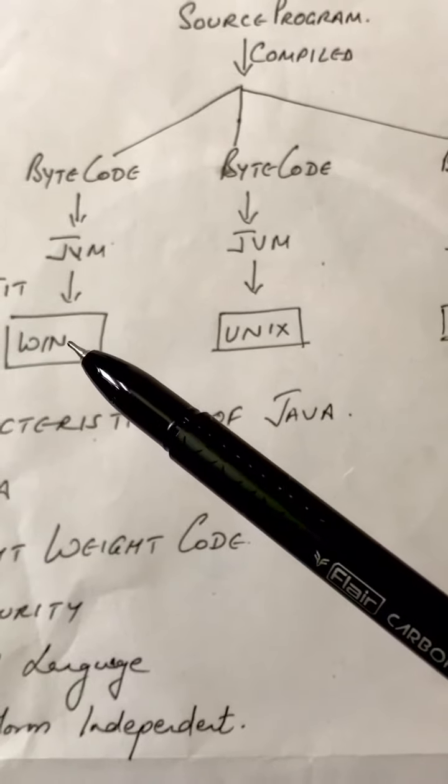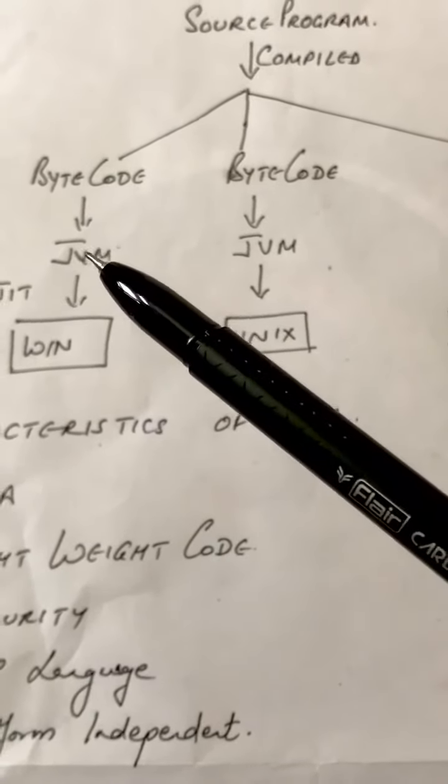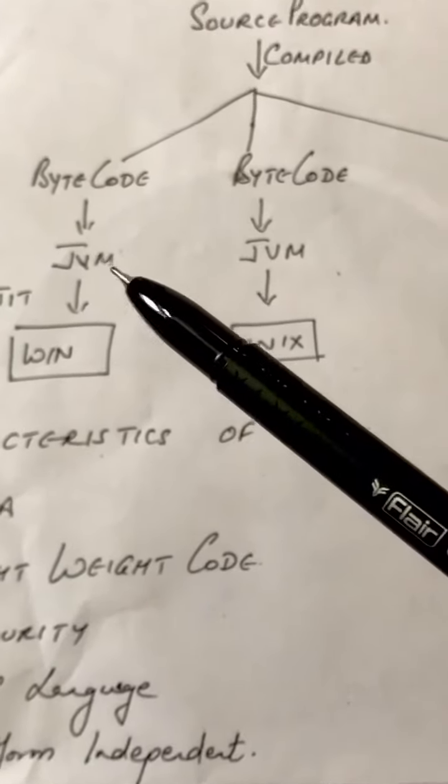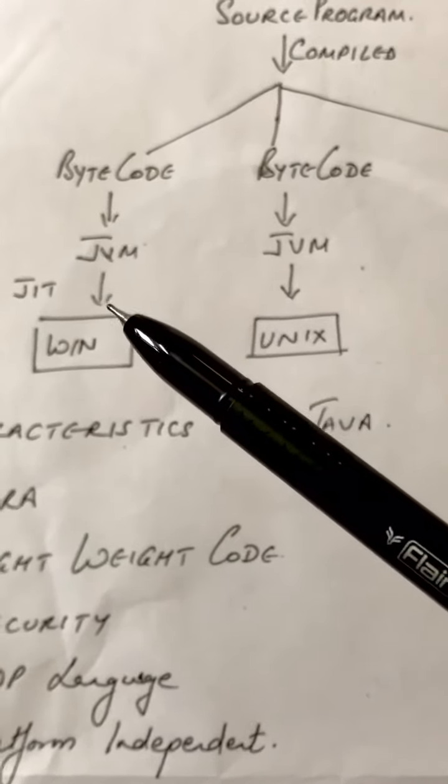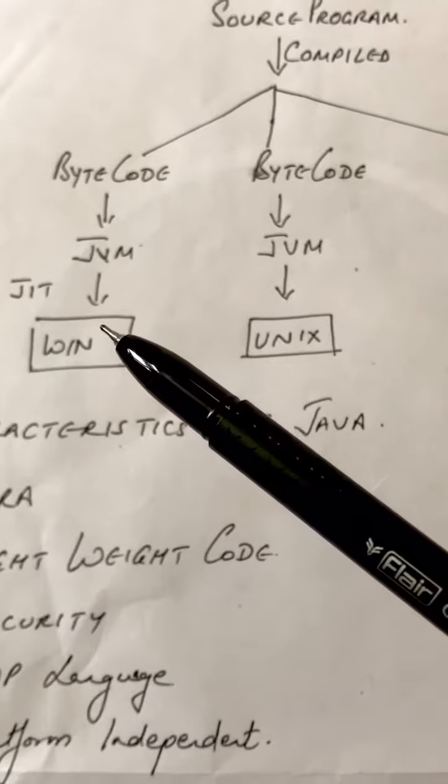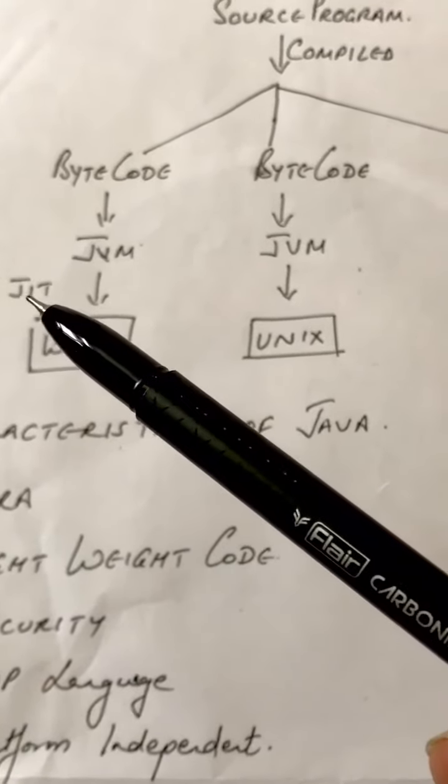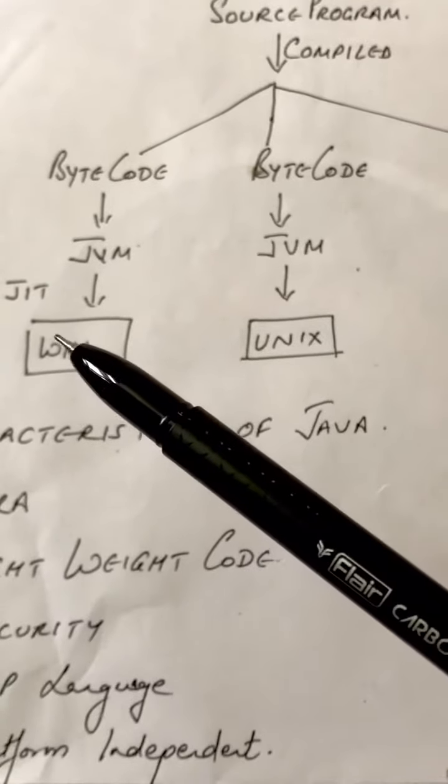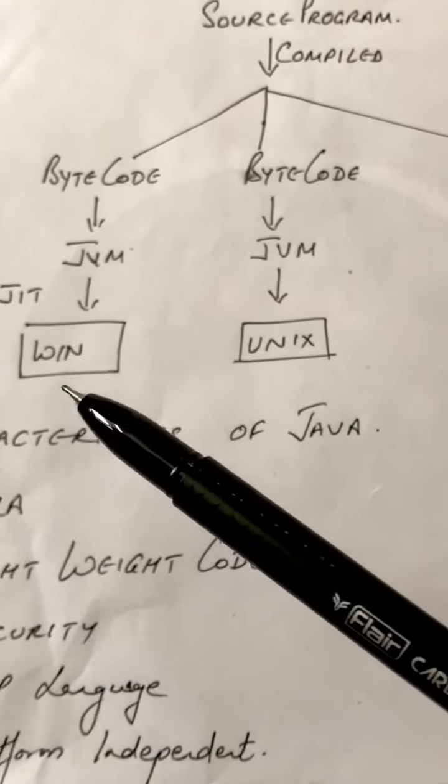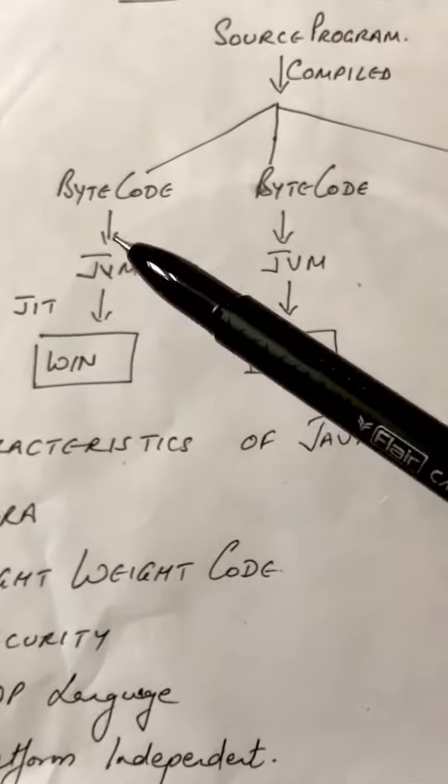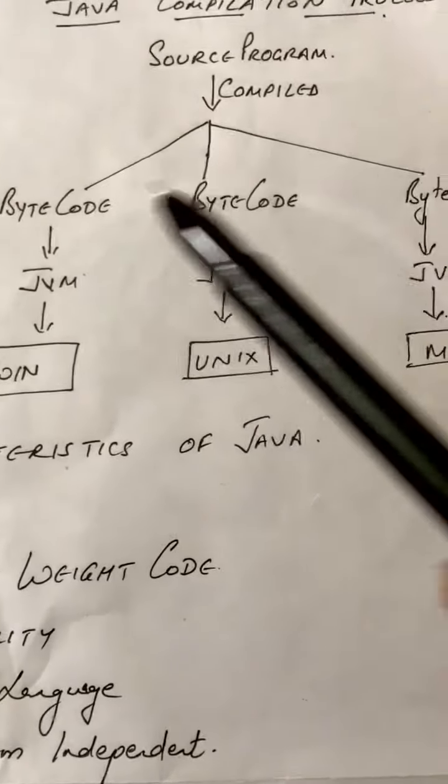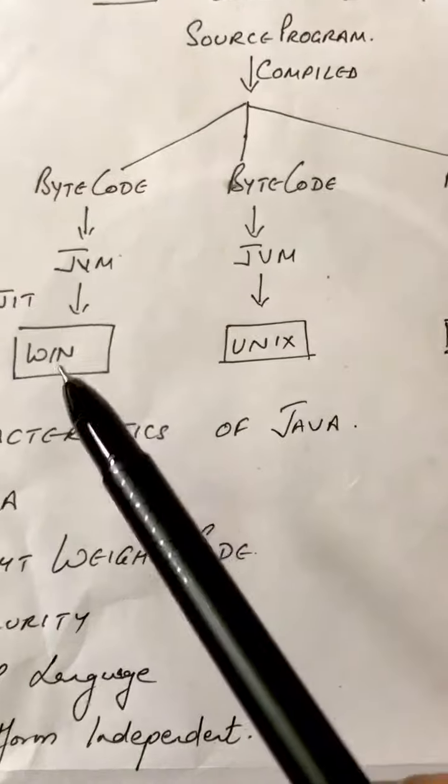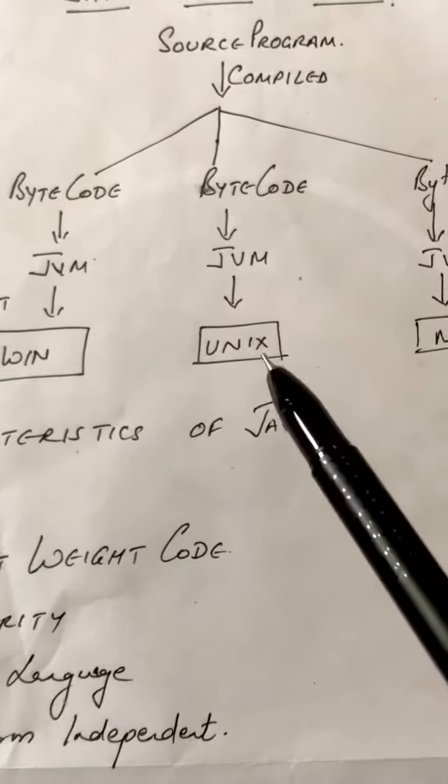It has its own operating system, that is what we say it has its own platform. Now this JVM is converted to native executable code by JIT, that is just-in-time compiler, which is in the JVM. So different three machines, same bytecode for all. JVM is converted into native executable machine code for different machines.